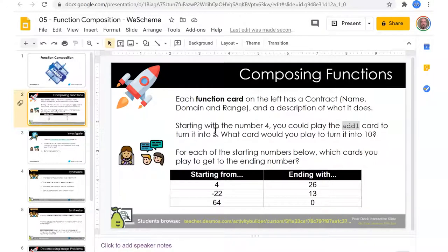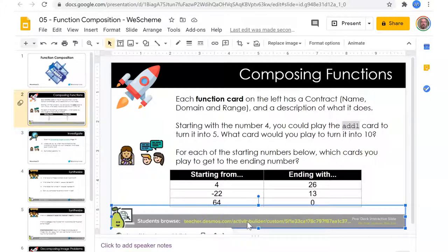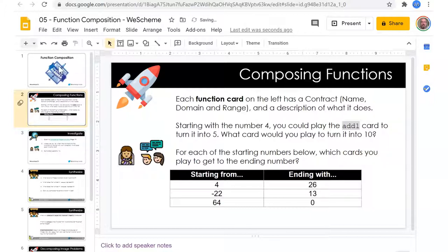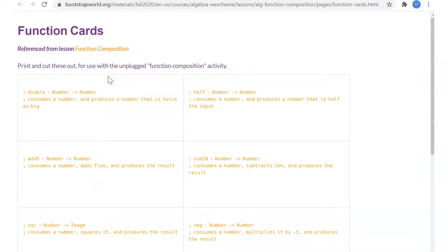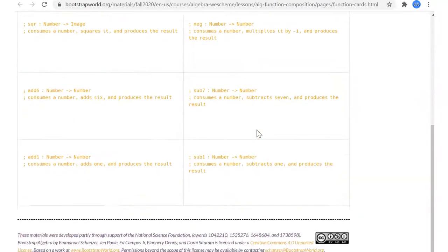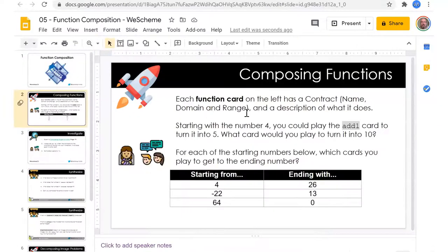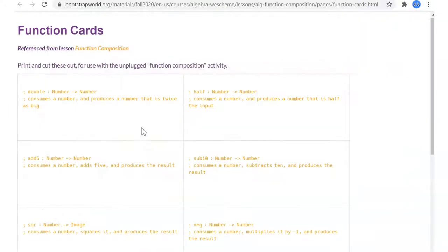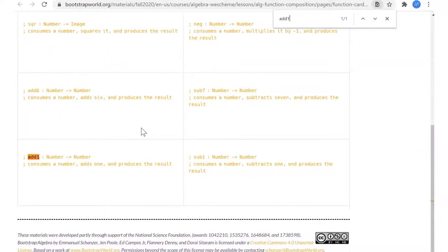Seven slides, each function card. The left has a contract name, description of what it does. Starting with the number four, play the add one card to turn it into five. Let's look back over here at function cards print and cut. Here's function cards so we can cut those out. Each one consumes a number, adds one, and produces the result.